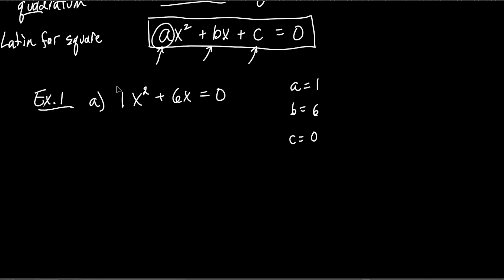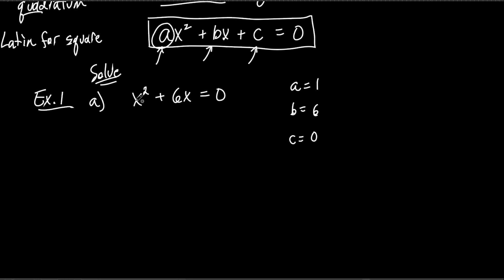Now we will use these numbers later, so it is important to recognize which one is a, b, and c. What we're going to do is solve for x. That's what all these problems tell you to do. Why do you factor? You factor in order to solve for a variable — that's why you learn math. That's what engineers do, architects do. Anybody that uses math does it because they want to solve for the variable.